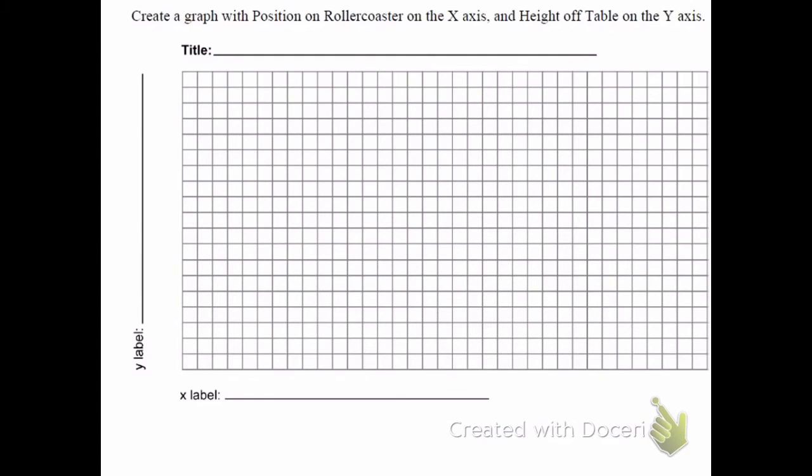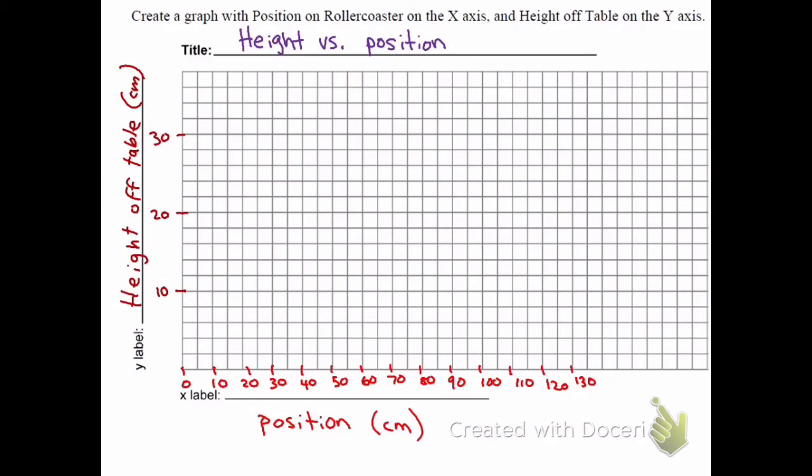The next thing you're going to do is to make some graphs of this data. The first graph is going to compare the position on the roller coaster, so basically how far down the little ramp is it. That's going to be on the x-axis, and the height off the table is on the y-axis. On the x-axis, I recommend counting by fives. Each block is worth five. For convenience, every other block is labeled 10. And that gets you up past 130. If you'll recall, the ramp goes to 125 as your last data point. The y-axis then, the height off the table, also in centimeters.